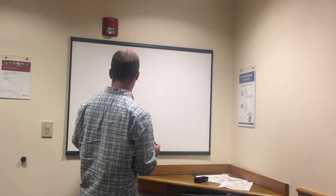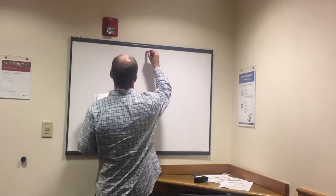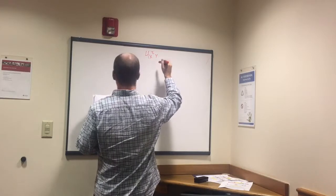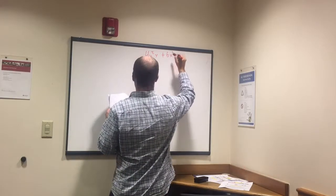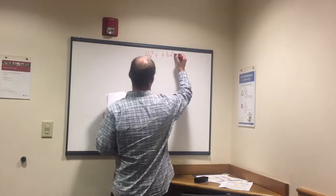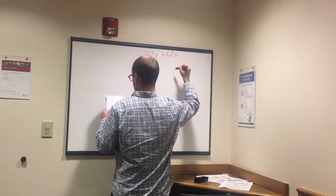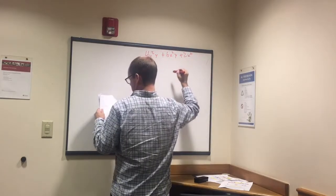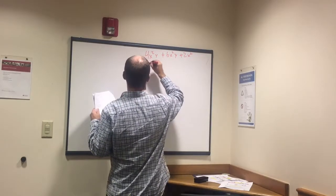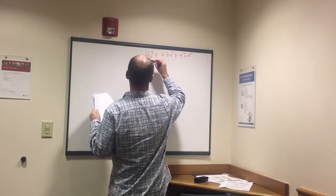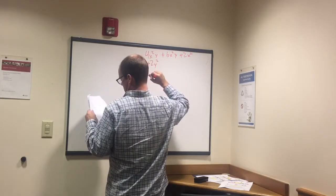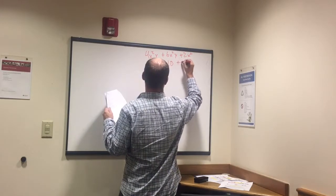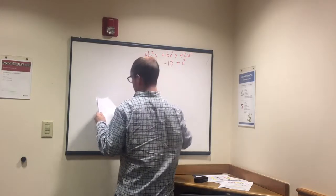We're going to do another one. This one is long. 4x squared y plus 6x squared y plus 2x squared plus 2y squared plus 2y squared minus 10 plus x squared.